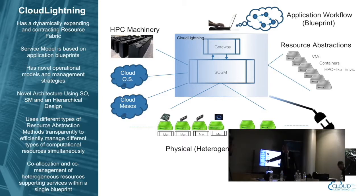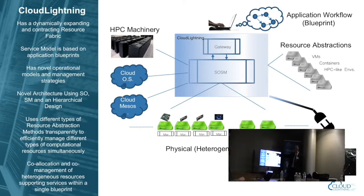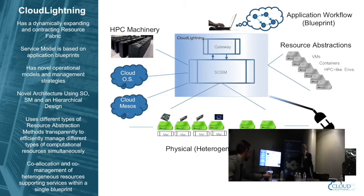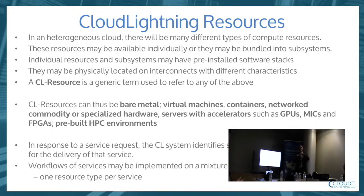We use different types of resource abstraction methods transparently — we can use containers and VMs to manage different types of computational resources simultaneously, all within the same blueprint. We have co-allocation and co-management of heterogeneous resources, supporting services within a single blueprint. This single blueprint will come in and the system will co-allocate and co-manage all resources necessary to serve that blueprint, according to a quality of service metric associated with the deployment.